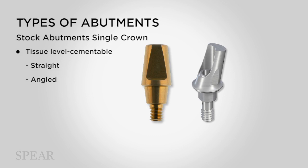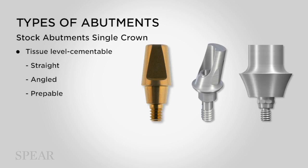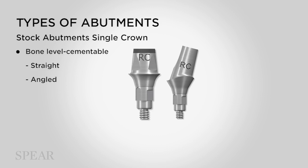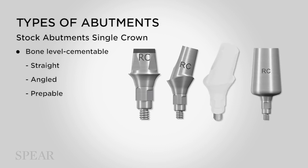The third type of stock abutment is a preppable abutment. The abutment is screwed into the implant or into an implant analog — a replica of the implant — and then that titanium abutment is actually prepped to fit the circumstances of that individual tooth. Bone-level implants also have stock abutments: straight, angled, and available in both titanium and zirconia, as well as a preppable option. However, we seldom use stock abutments in bone-level implants, because one of the great advantages of the bone-level implant is that it allows us to customize the abutment to most appropriately fit the tissue profile and circumstances of that patient.